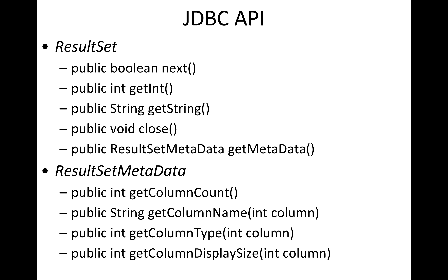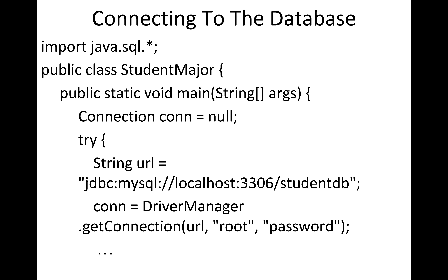The result set also allows us to interact with the metadata of a database. We can ask what tables are there, and given a table, what are its columns, what are the data types — is it a date, a string, an integer, a boolean? So it can ask about the structure of the data itself: the number of columns, the names of the columns, the data types, and the schema.